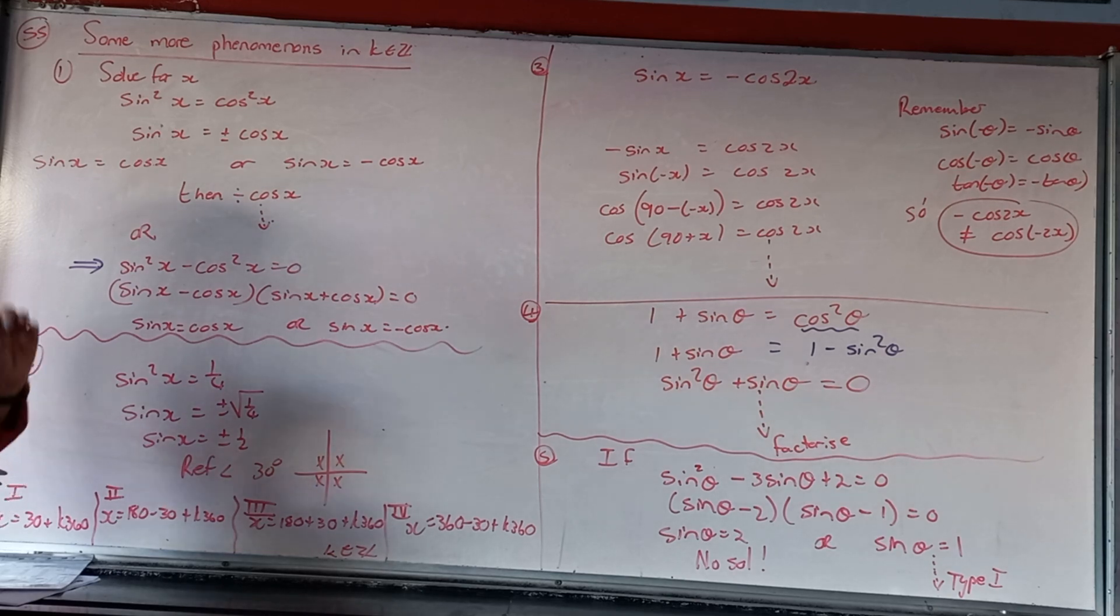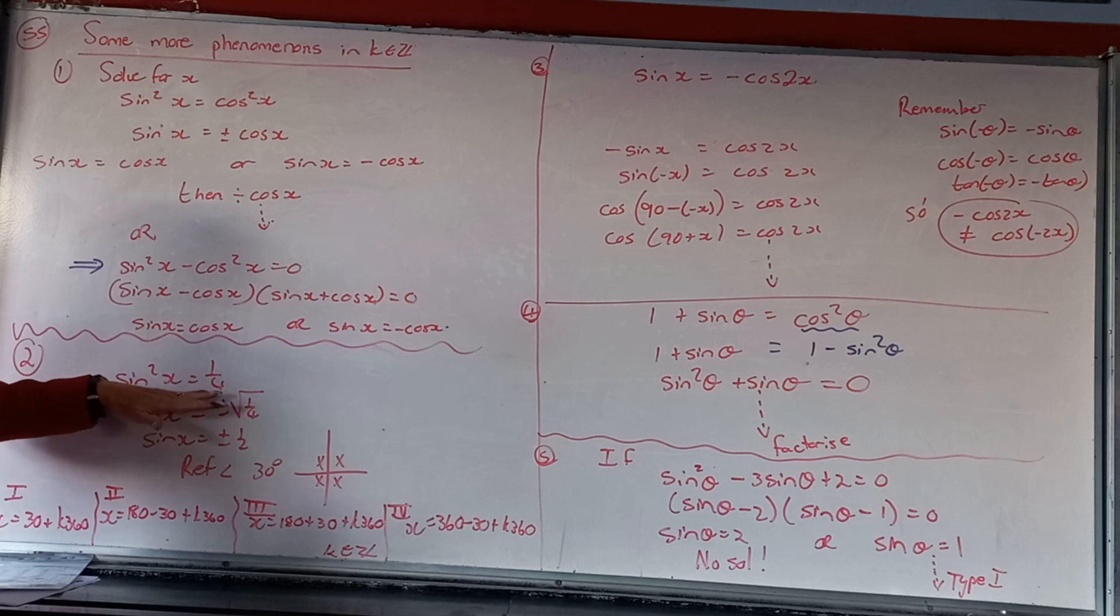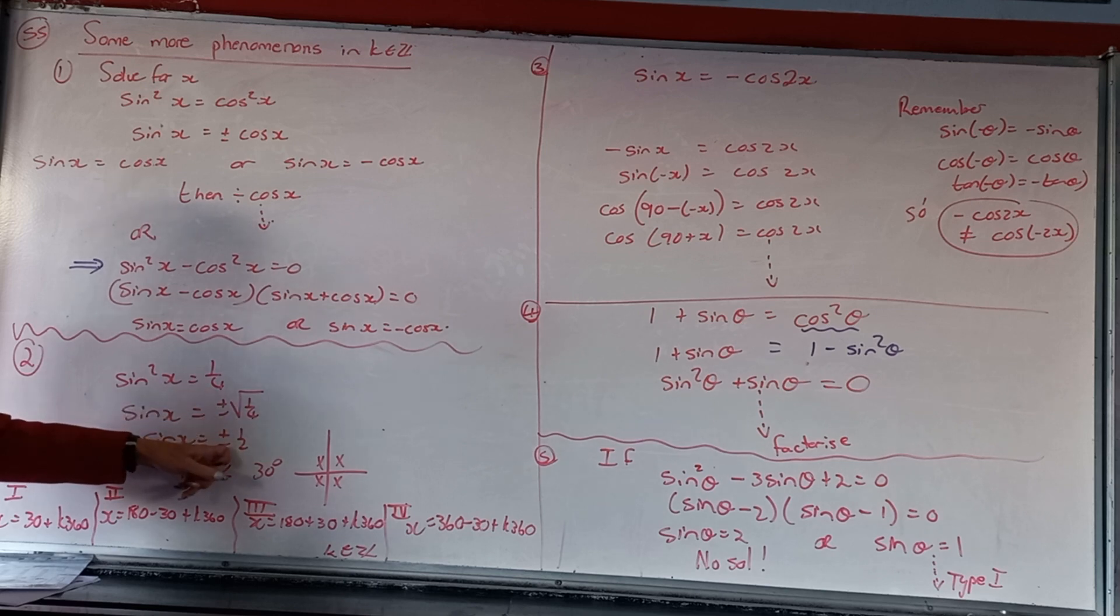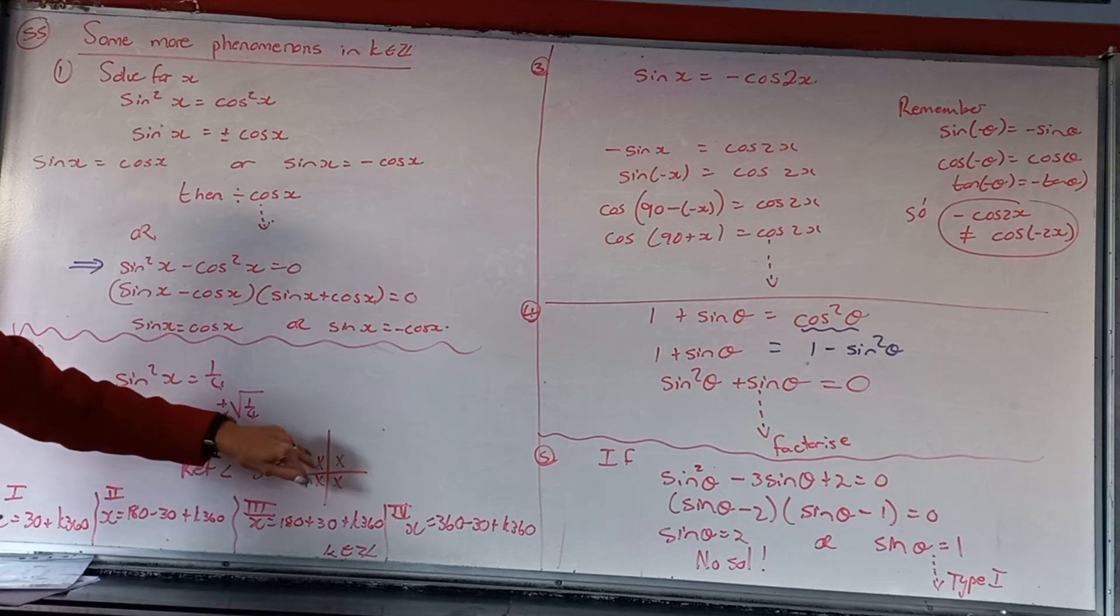And then we can still go on and you're going to divide by cos and get your general solution. So this is just showing you some nitty gritties that can happen. The second thing, when I've got a square, I will square root. The answer will be plus and minus. And if the answer is plus and minus and I get to my reference angle, my quadrants that I'm going to be busy with, it's all four quadrants.